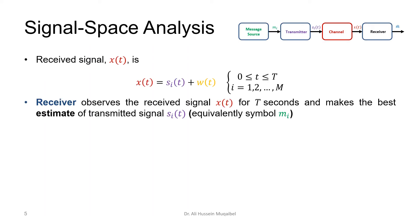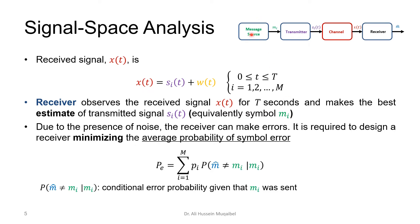The received signal at the output, referred to as x, is the sum of the transmitted signal plus w. The received signal is observed over the time duration T, and this is true for all i from 1 to M. The receiver observes this signal and makes the best estimate. Because of the presence of noise, the receiver may make errors, so we have an optimization problem: design a receiver that minimizes the average probability of symbol error — that's one of the criteria we can use.